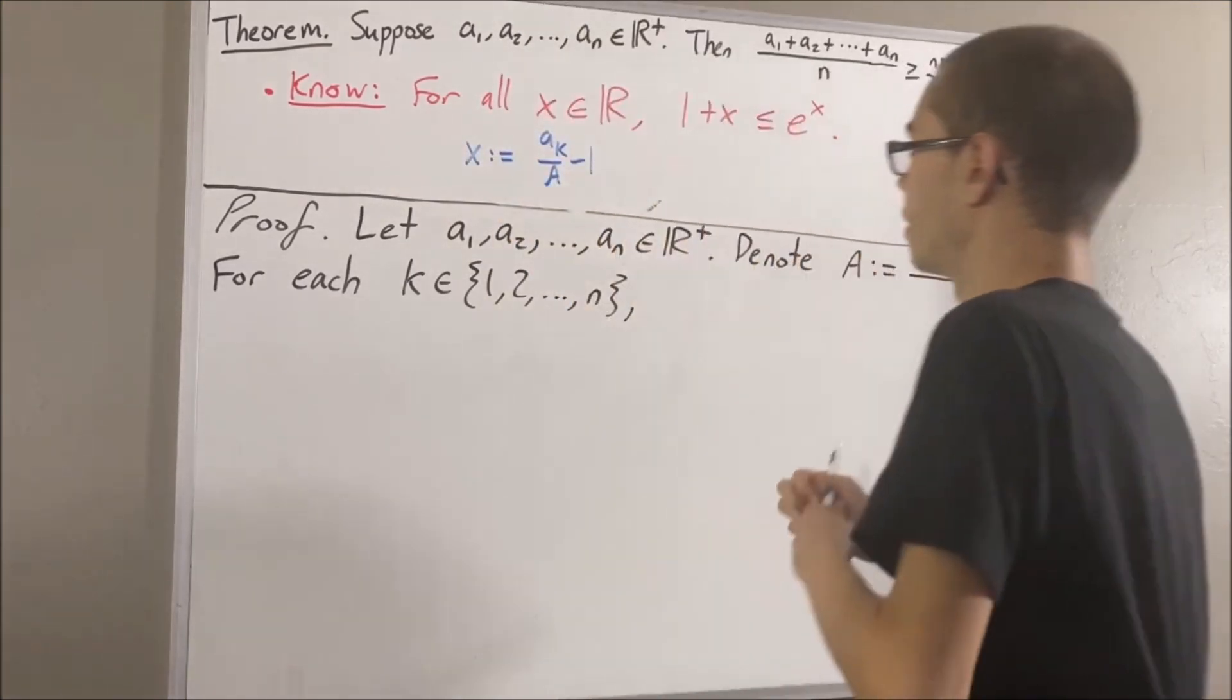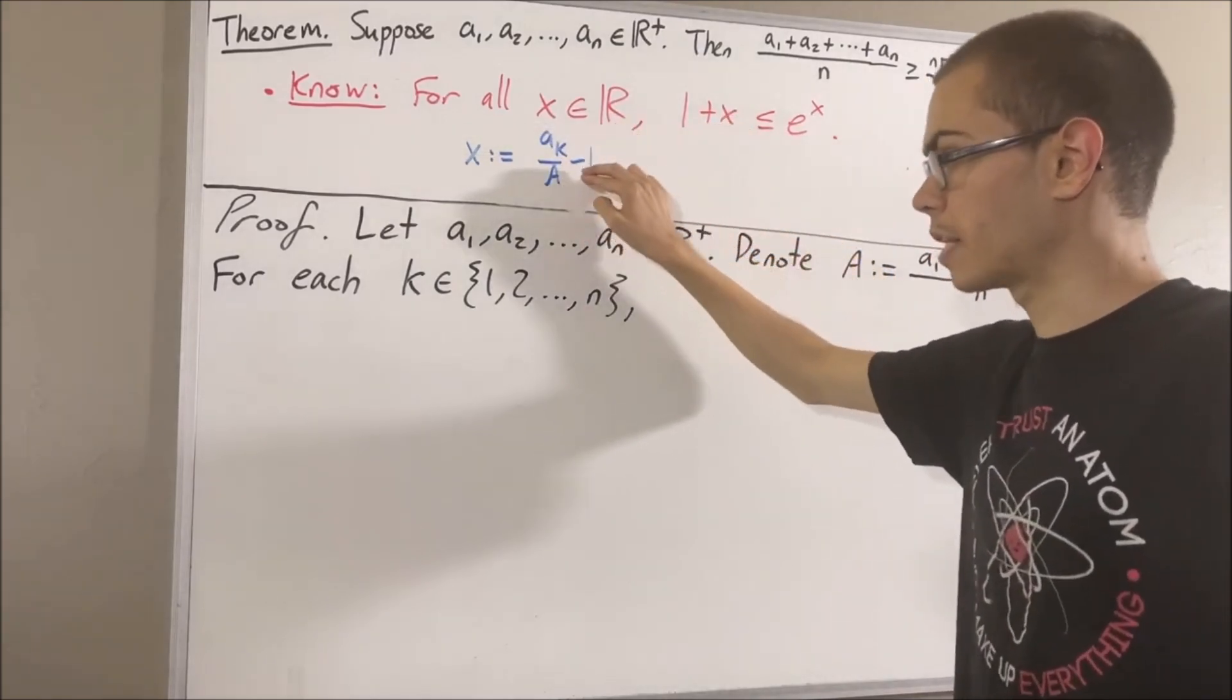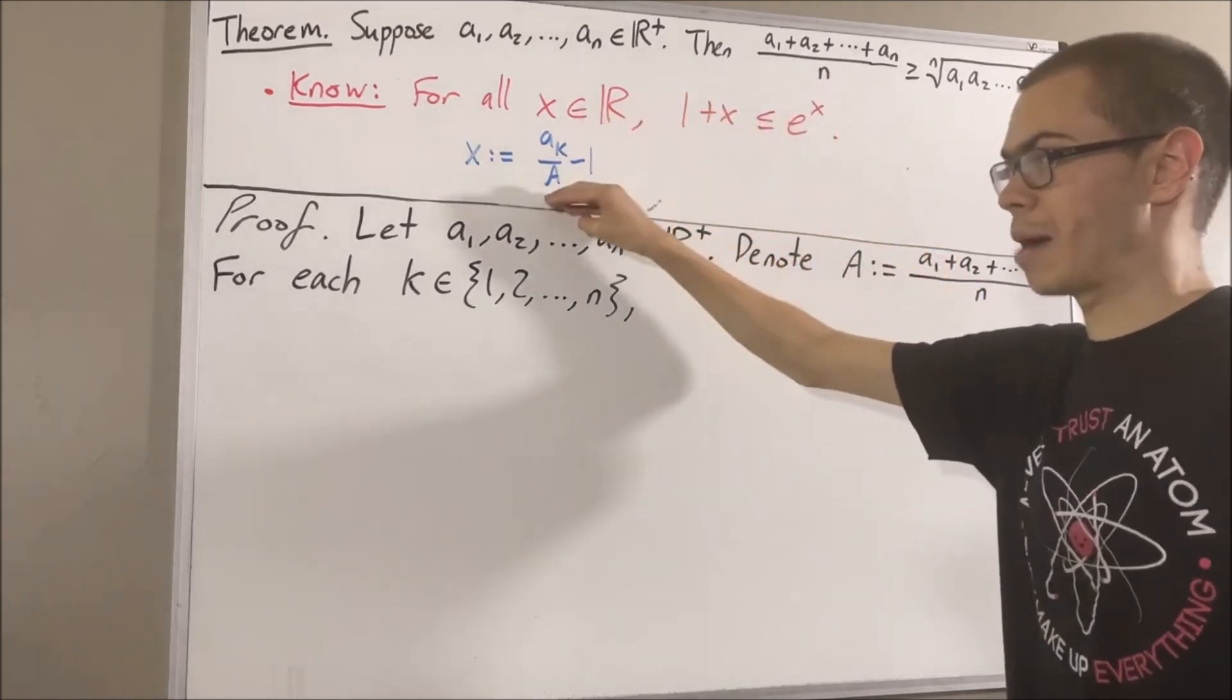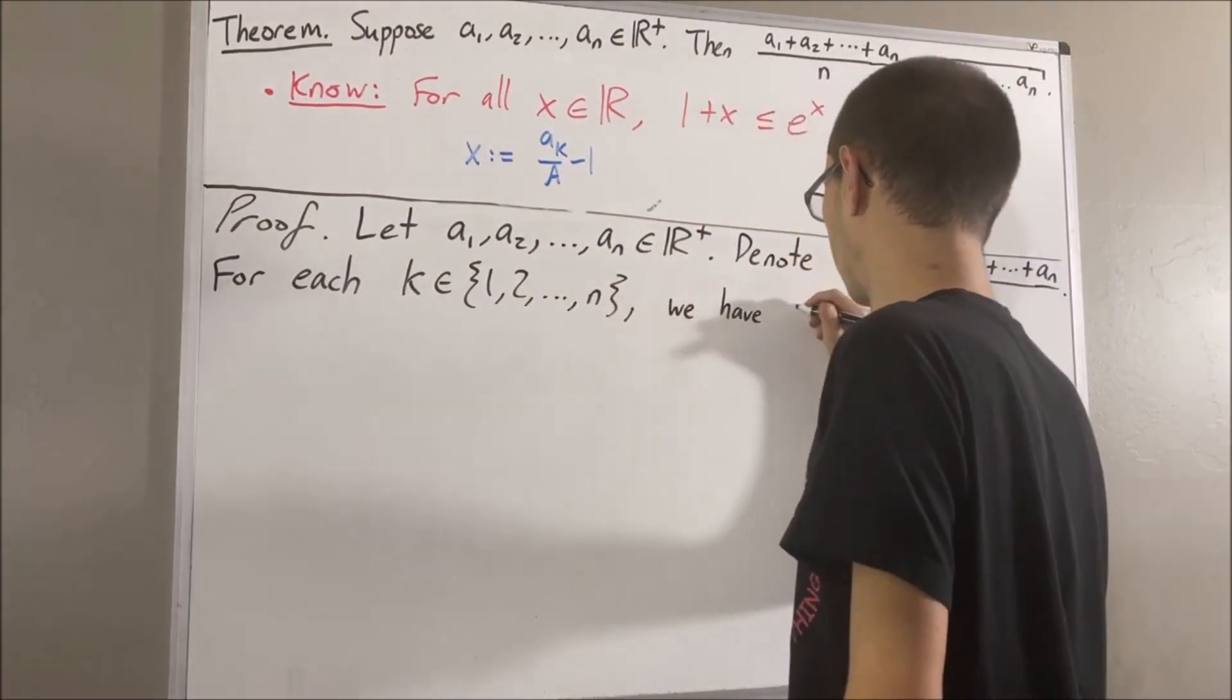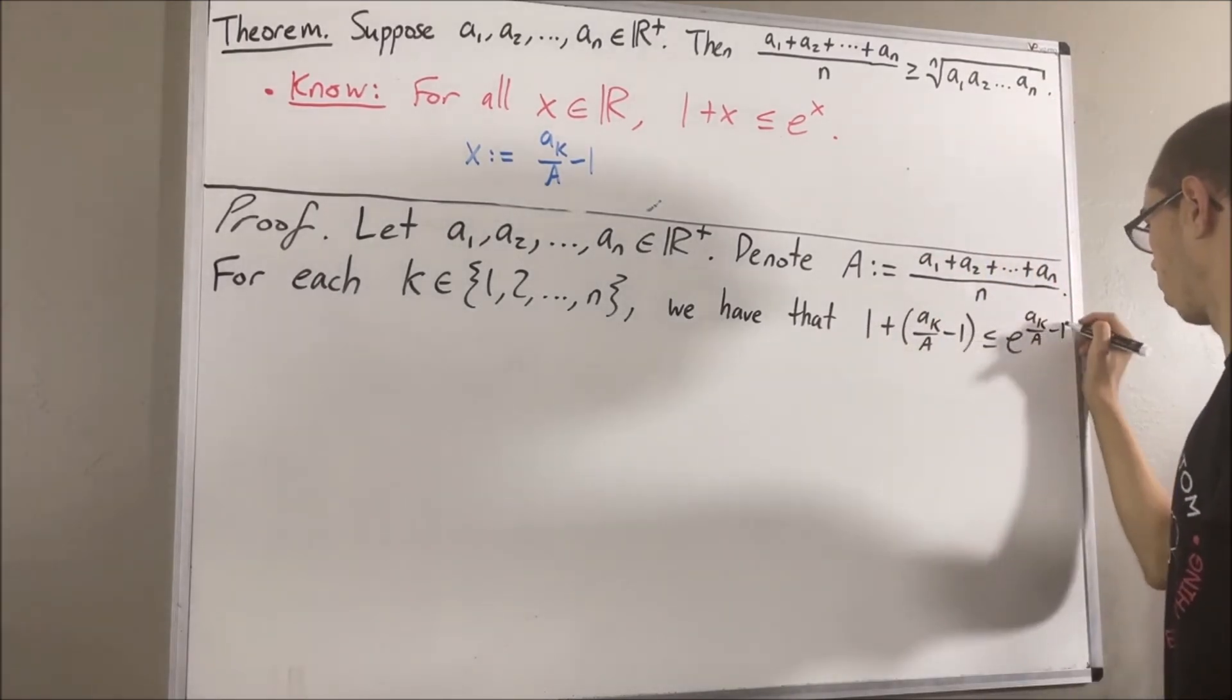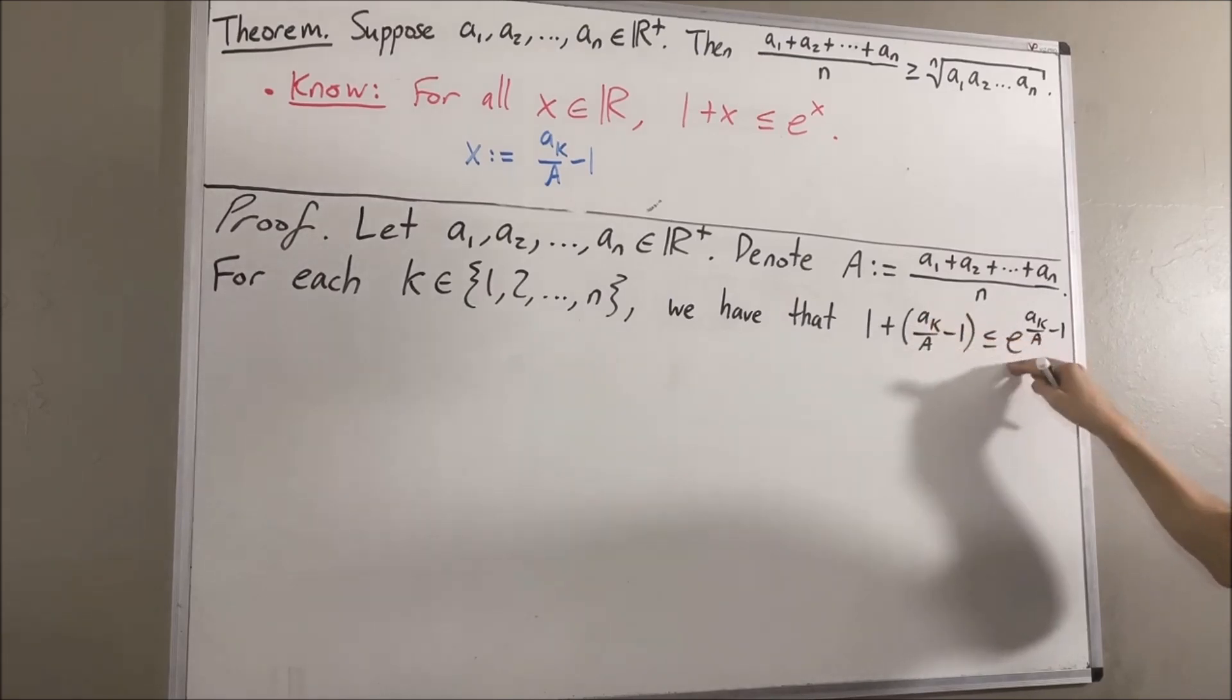Well then, that means we have that 1 plus a sub k over capital A minus 1 is less than or equal to e to the power of a sub k over capital A minus 1. So, a sub k over capital A is less than or equal to e to the power of a sub k over capital A minus 1.